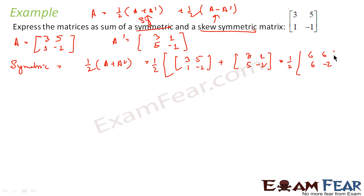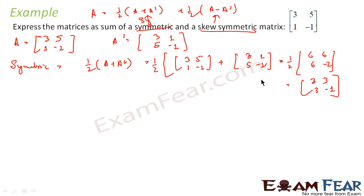Multiplying by 1/2: 6/2 = 3, 6/2 = 3, 6/2 = 3, -2/2 = -1. So the symmetric part is [3, 3; 3, -1].